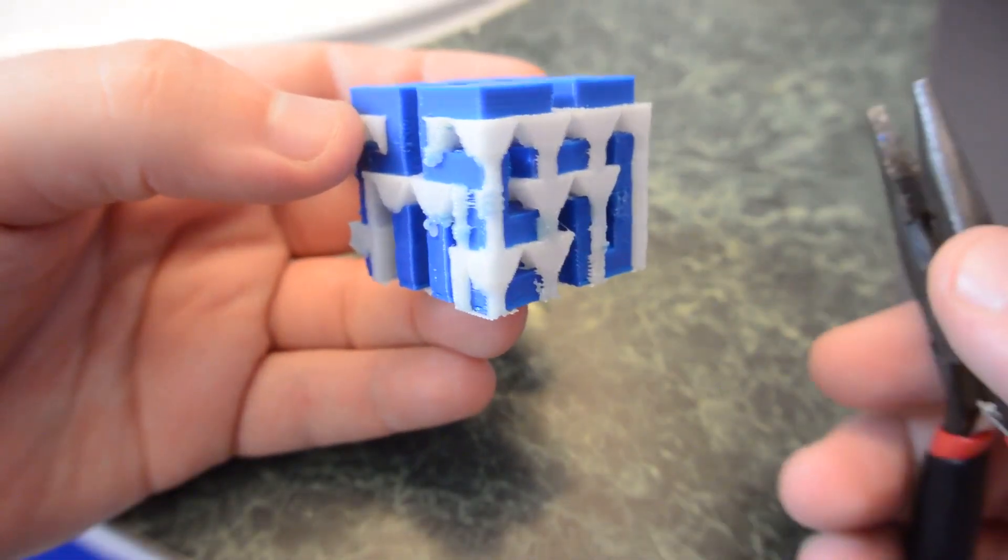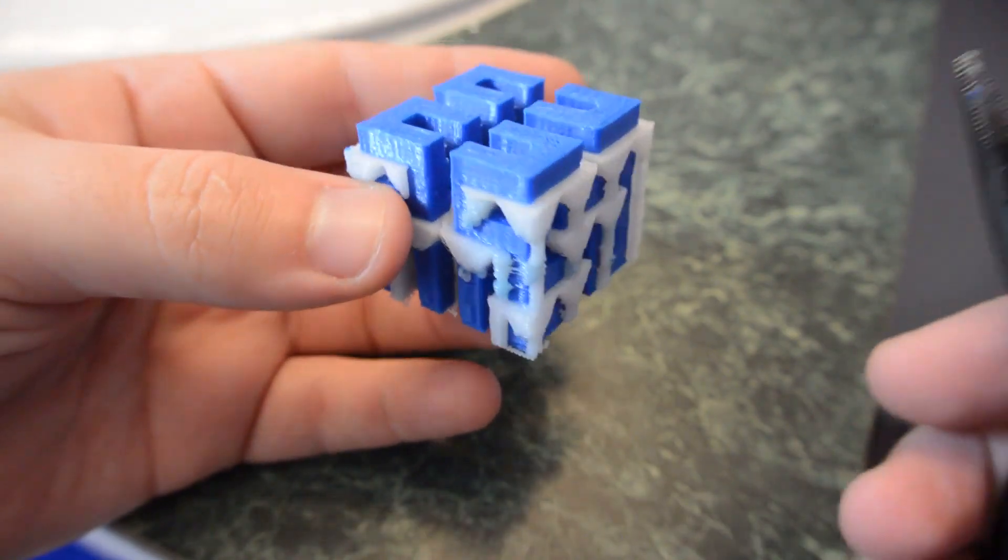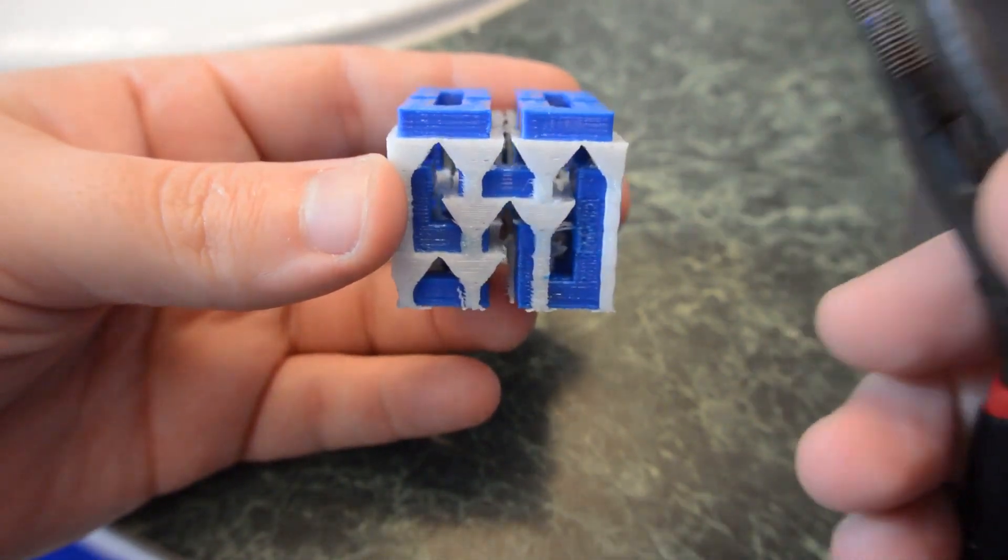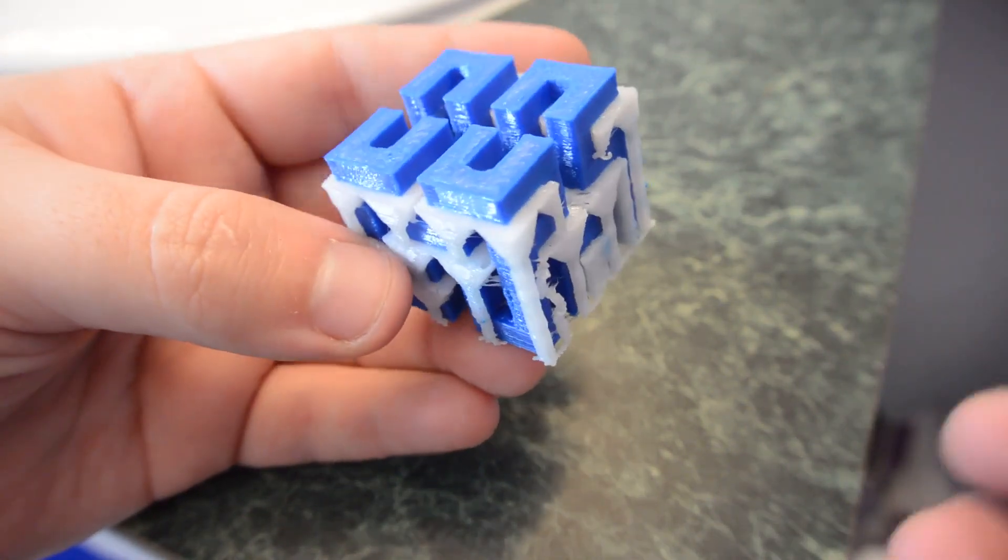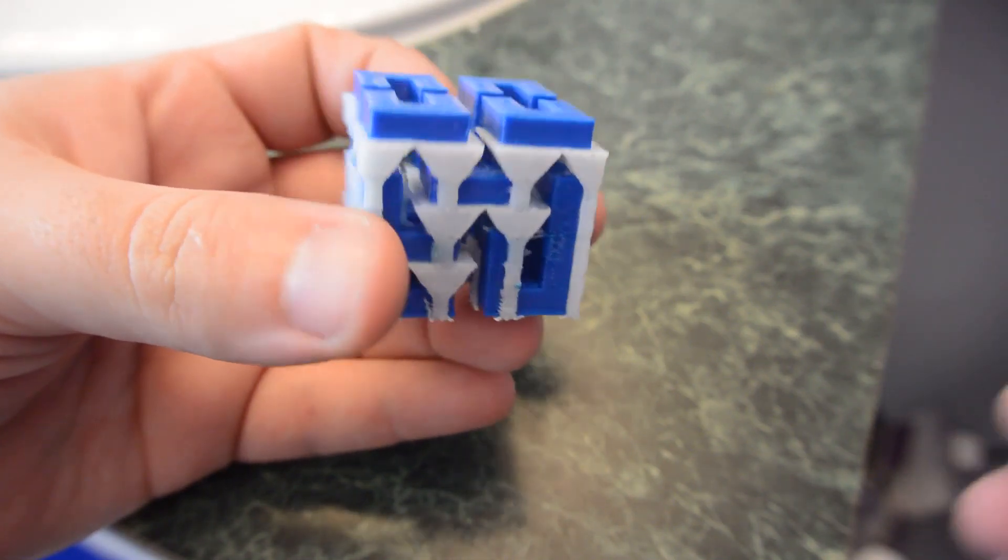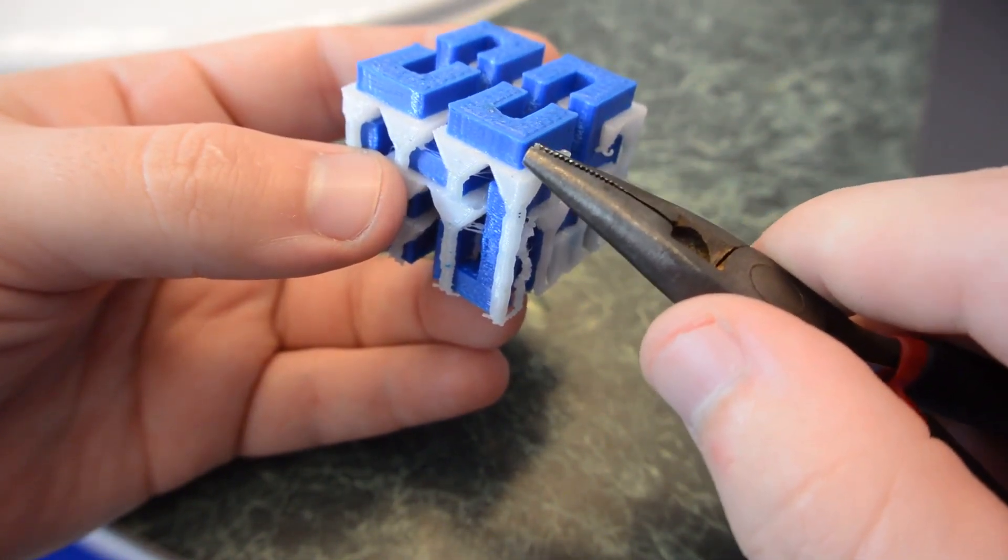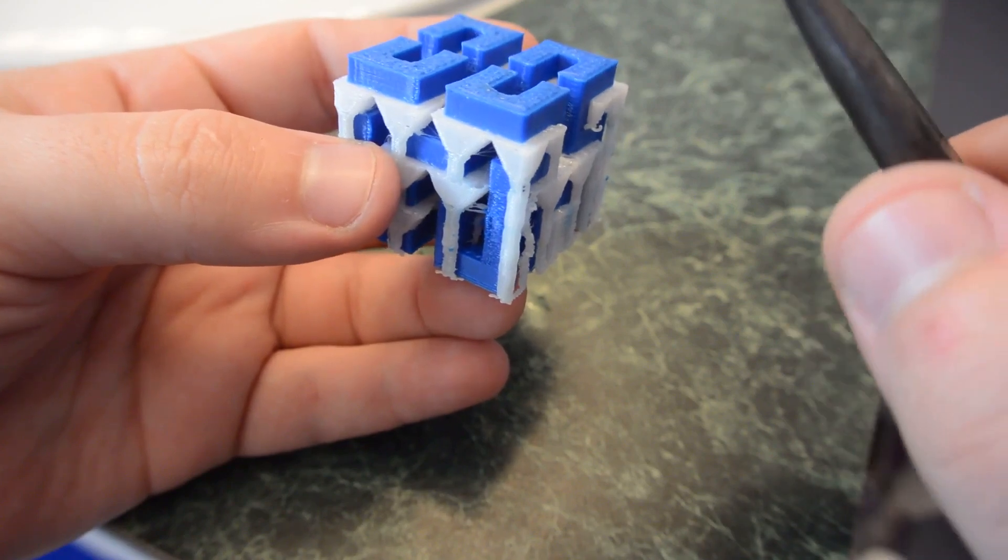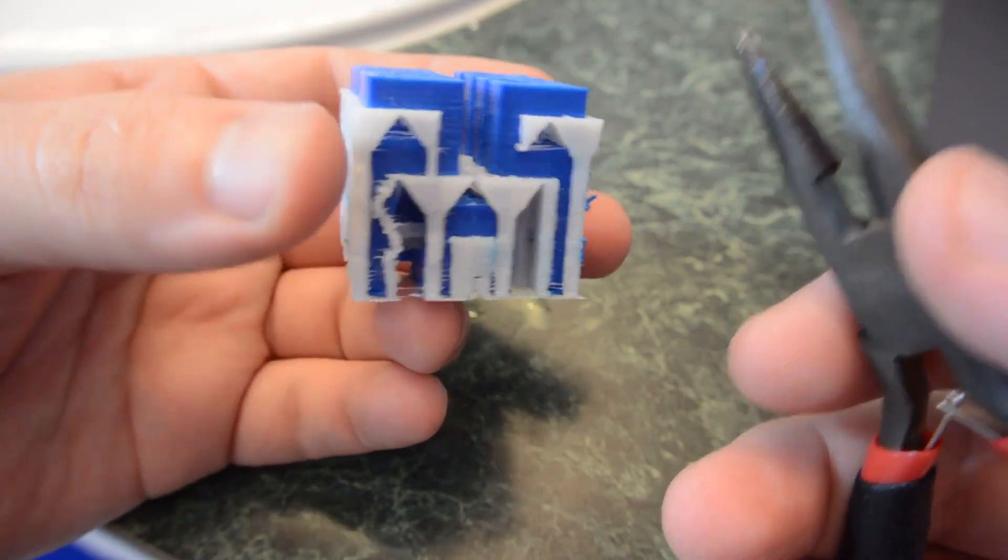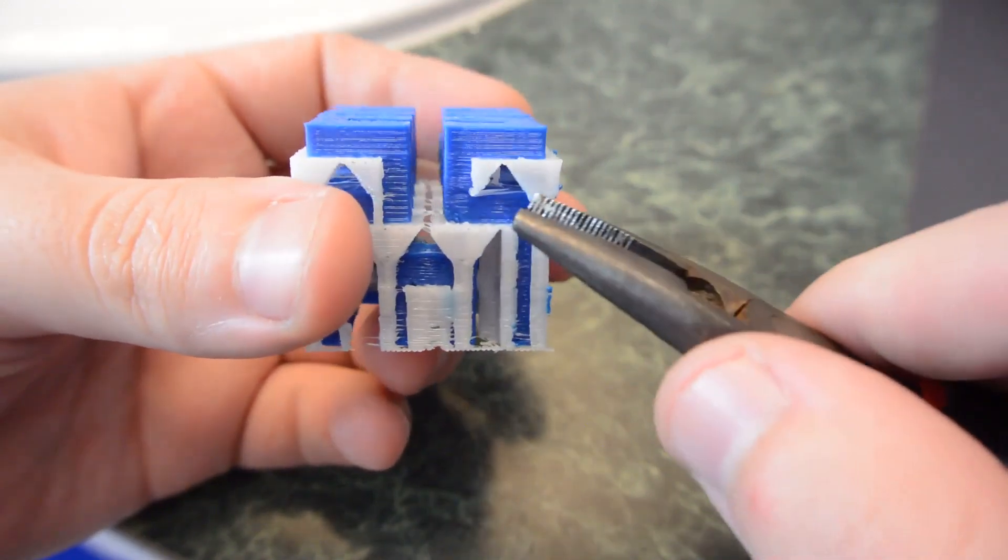So, before we go and try to dissolve all of this support material, I want to see how much of it we can pull off. Because, obviously, if we can pull it off, it's much better than waiting for it to dissolve. And that's less limonene use and less time needed for that. And I heard that the HIPS filament doesn't actually adhere to the ABS well at all. Like, it pretty much does not bond. So, I'm curious to see if it's easy just to grab it and pull it out. So, let's give that a try first.